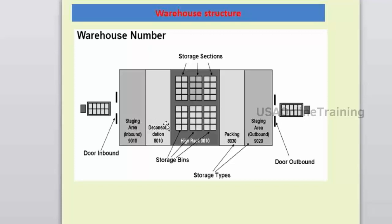That's exactly what I want to know. The concept is good. I just want to add — you might also have replenishment in between or some production before shipping, right? Yes. I will take up the course content and we can discuss those topics. This warehouse diagram shows all the processes: doors, staging area, deconsolidation, value-added services, work center, quality inspection, storage sections, packing, and PGI for outbound.